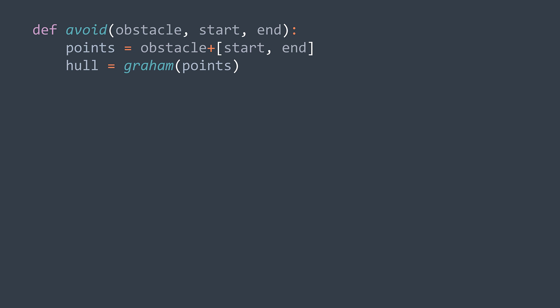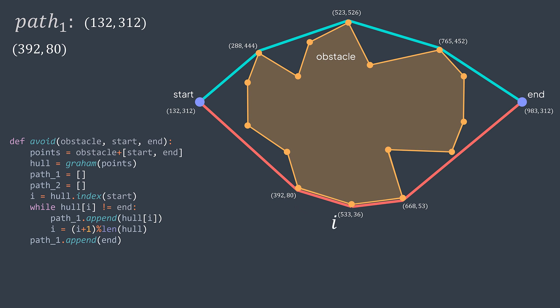Now we need to split the hull into two paths. For that we create two arrays path one and path two. The idea is that we will start from the position of the point start in the hull, then we keep adding hull points until we reach the endpoint. We write while hull of I isn't equal to end, we add hull of I to the path one, and we move to the next point in the hull.